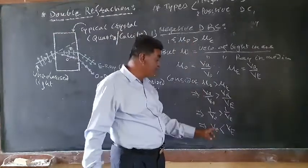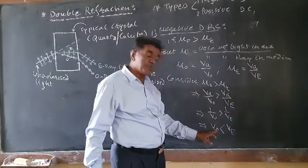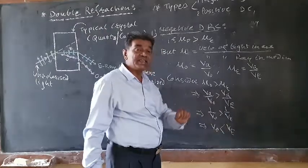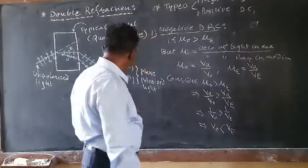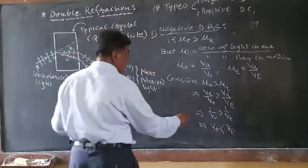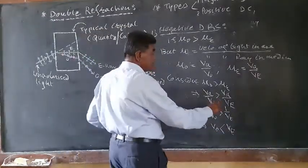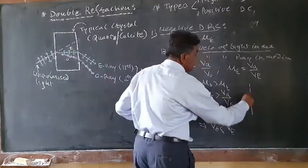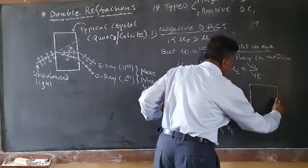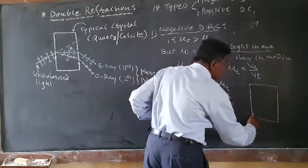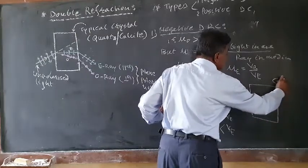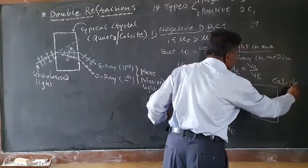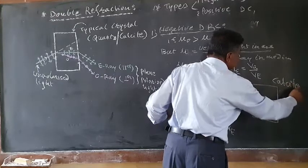Therefore, for a negative double refracting crystal, the velocity of the O-ray is always less than the velocity of the E-ray. A good example of a negative double refracting crystal is calcite.